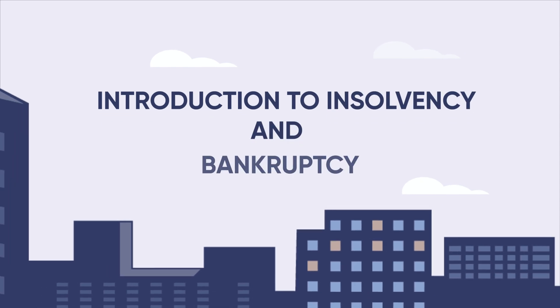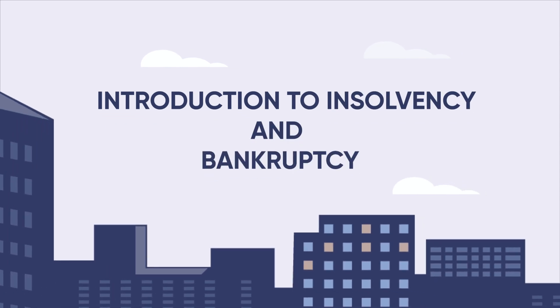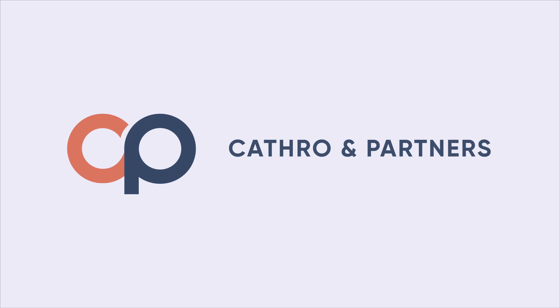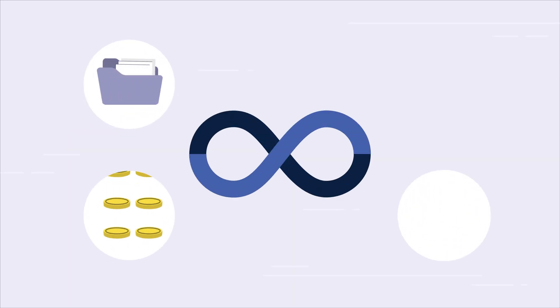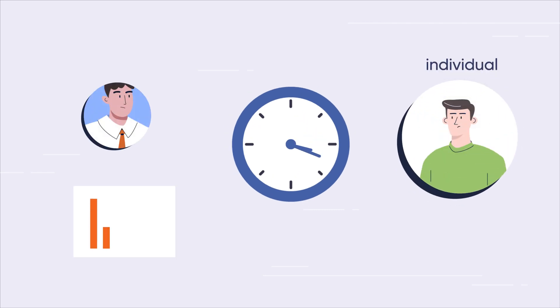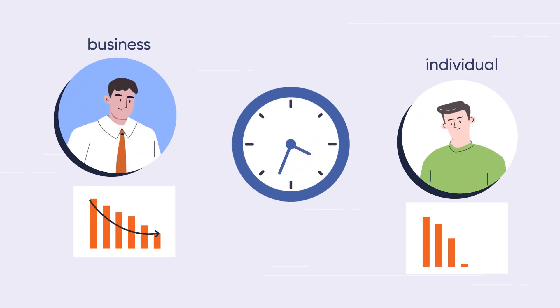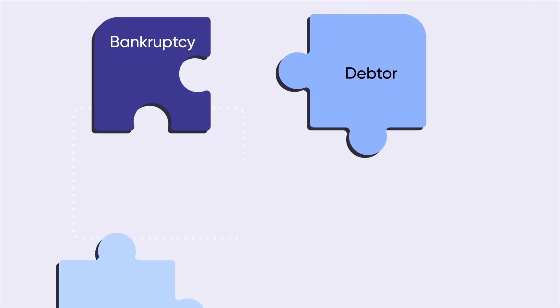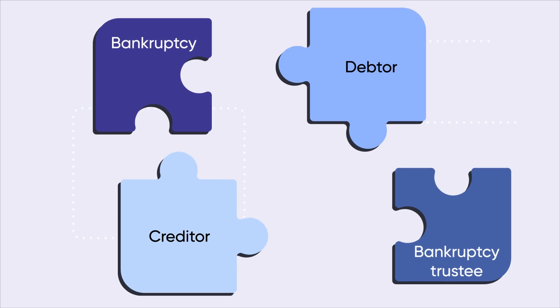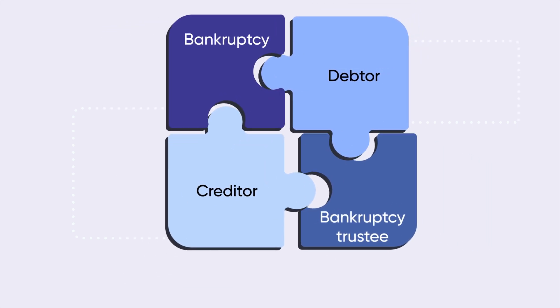Introduction to Insolvency and Bankruptcy. Welcome to Cathro & Partners' Guide on Bankruptcy. Before we explore what bankruptcy entails, let's understand some key concepts. Insolvency occurs when an individual or business cannot pay their debts as and when they fall due. This guide will clarify terms such as bankruptcy, debtor, creditor, and bankruptcy trustee to help you navigate this complex area.